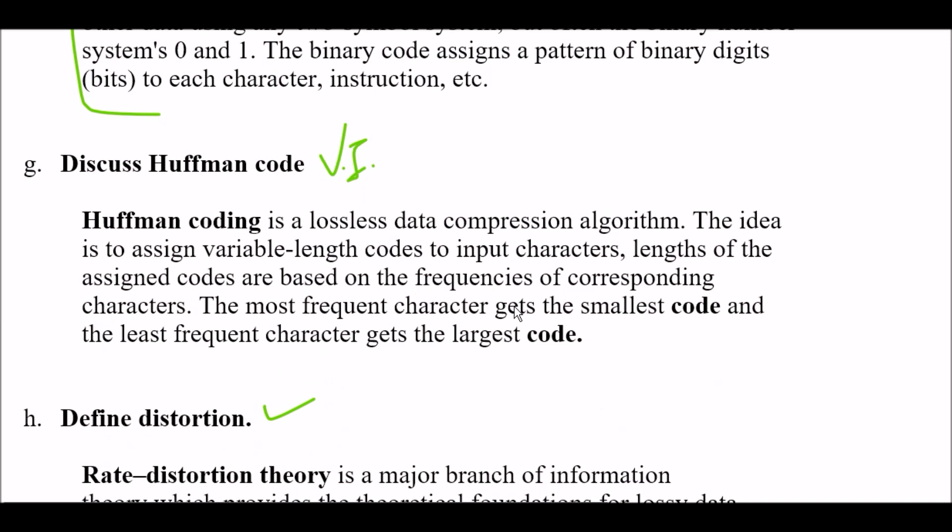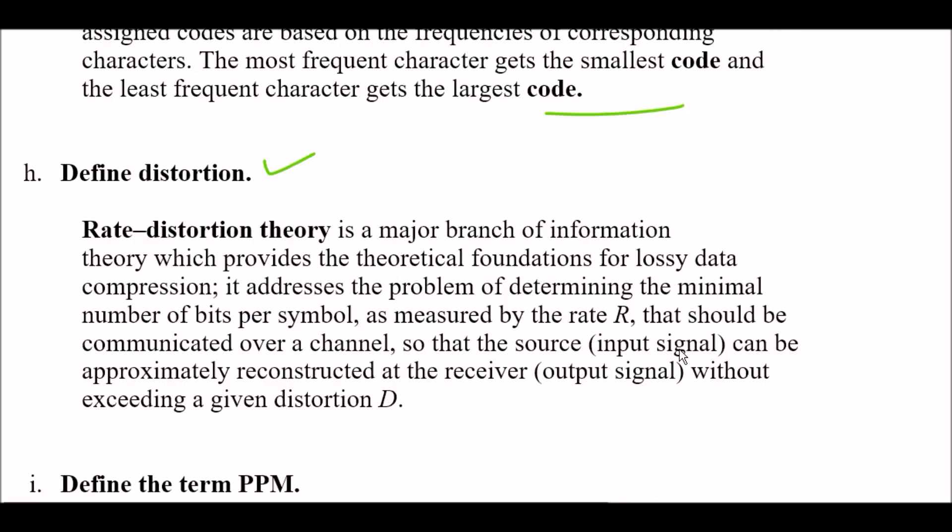Question G: Discuss Huffman code. Very important topic in your subject. Huffman coding is a lossless data compression algorithm. The idea is to assign variable length codes to input characters. Lengths of the assigned codes are based on the frequency of corresponding characters. The most frequent character gets the smallest code in Huffman and the least frequent character gets the largest code.